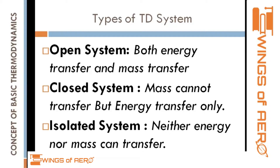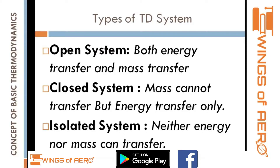In an open system, both energy transfer and mass transfer take place. In a closed system, mass cannot be transferred — only energy transfer takes place. In an isolated system, neither energy nor mass transfer can occur.